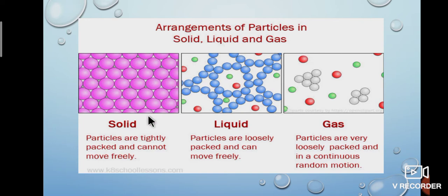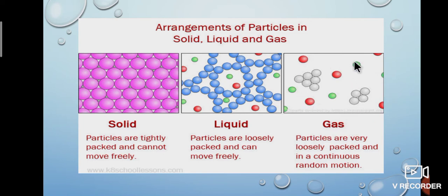In solid, particles are tightly packed and cannot move freely. Examples: book, table, building. In liquids, particles are loosely packed and can move freely. Examples: milk, juice, coffee. In gas, particles are very loosely packed and in continuous random motion. Examples: air in a balloon, wheels. In solids, particles are tightly packed and cannot move freely. In liquids, particles are loosely packed and can move freely. In gas, particles are very loosely packed and in continuous random motion.